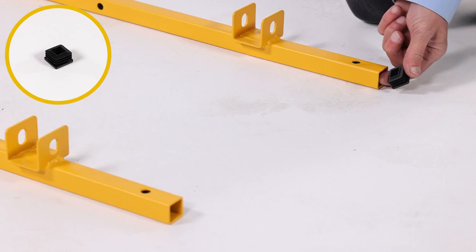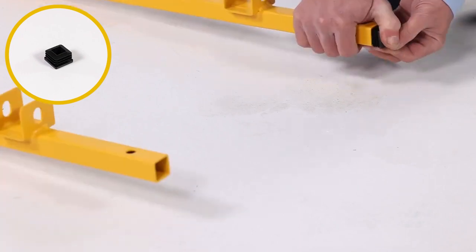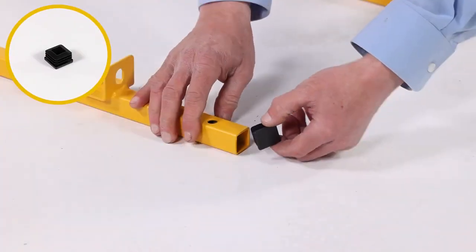Now, press the 2 1 inch plugs, Part Z, into the frame, Part 2. You can also use a rubber mallet to tap them in if necessary.